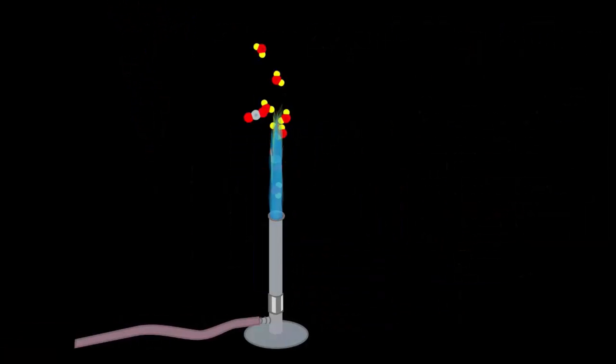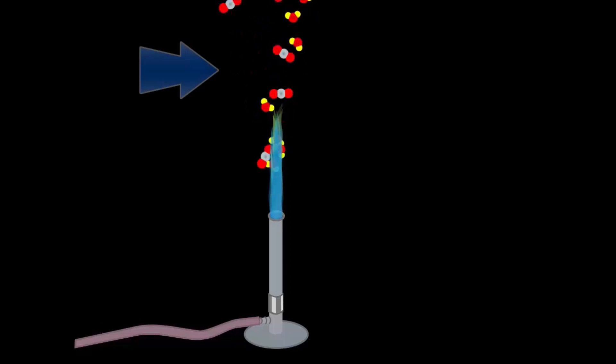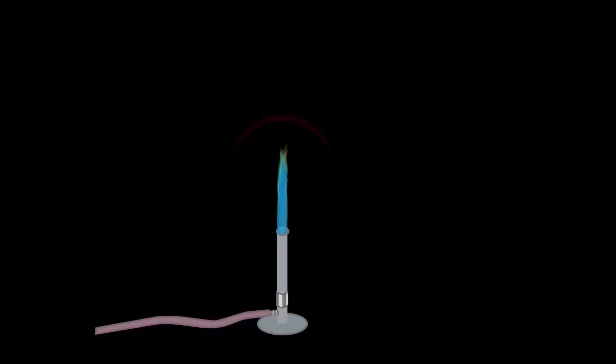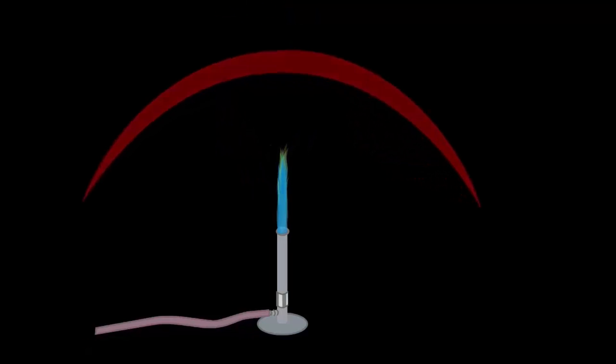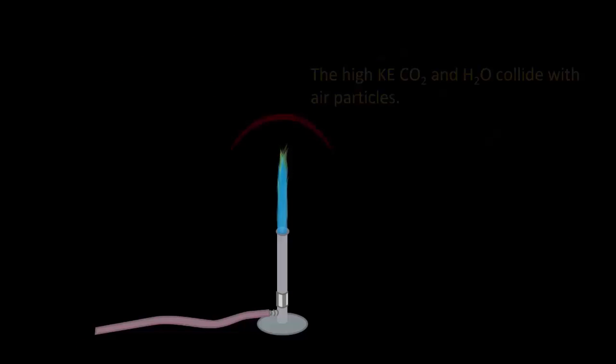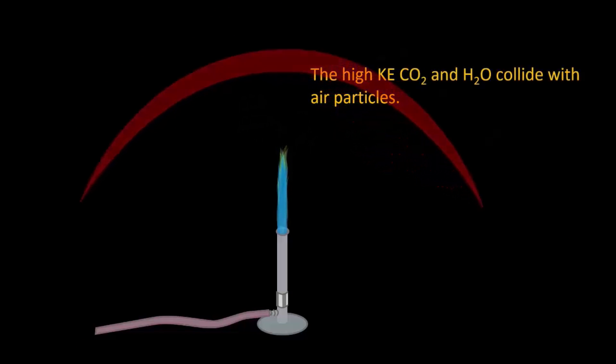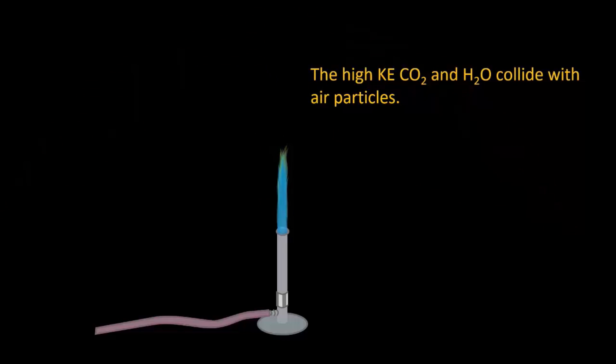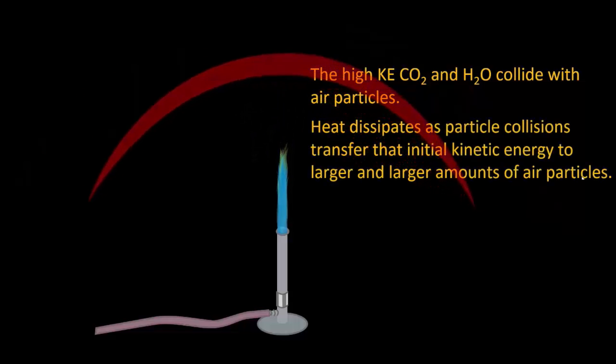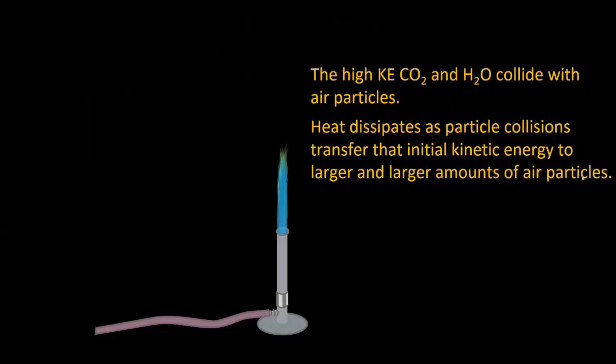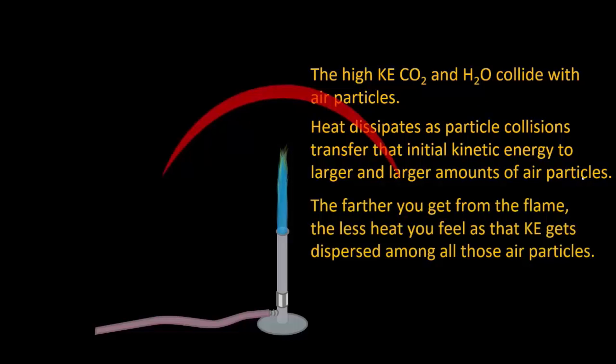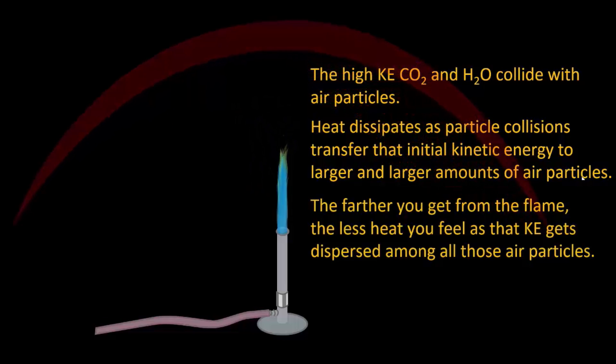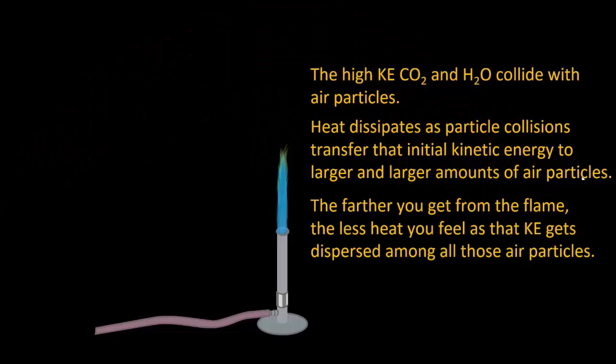Let's expand the idea of heat a little bit more. Heat is carried by the high kinetic energy, water and carbon dioxide. The heat transfers to the air and eventually dissipates. Why does that happen? Well, the high kinetic energy, carbon dioxide and water collide with air particles. Heat dissipates as particle collisions transfer that initial kinetic energy to larger and larger amounts of air particles. The farther you get from the flame, the less heat you feel as that initial kinetic energy gets dispersed and diluted among all those air particles.